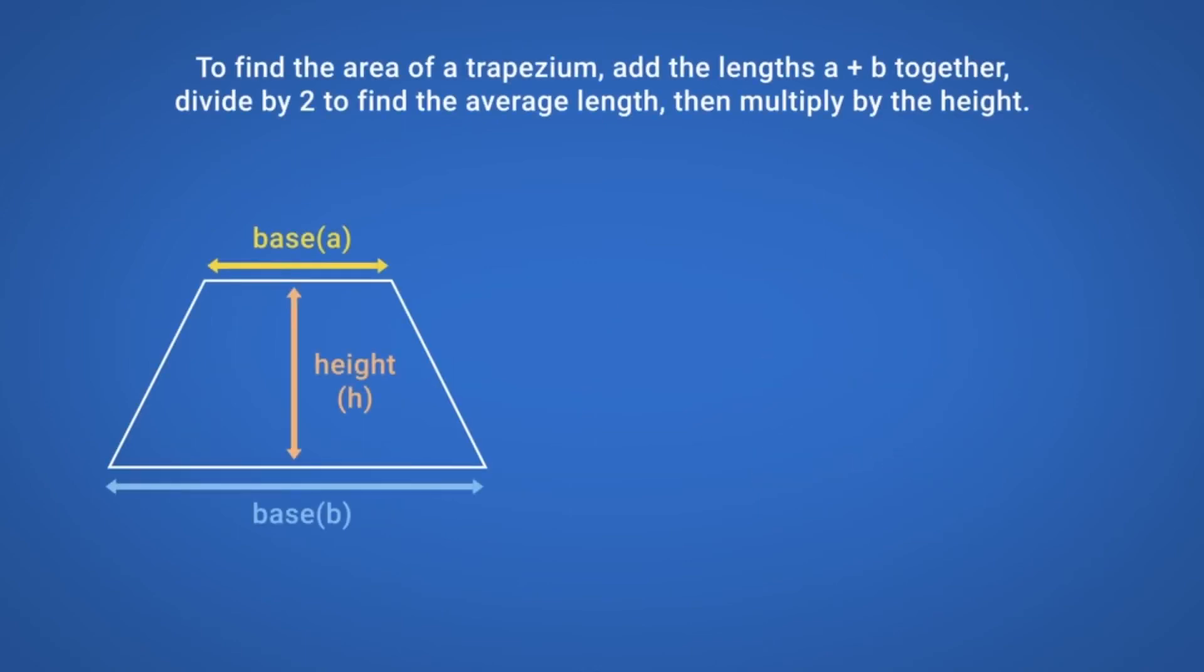To find the area of a trapezium, add the lengths a and b together, divide by 2 to find the average length, then multiply by the height. The formula for finding the area of a trapezium can be written in words or in symbols.